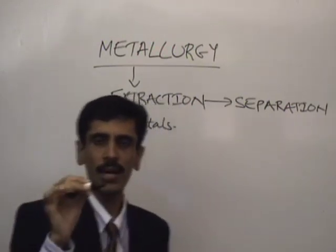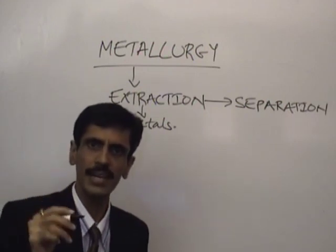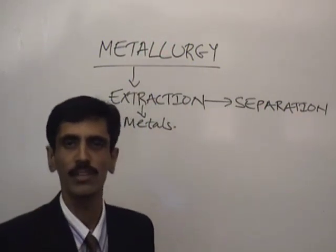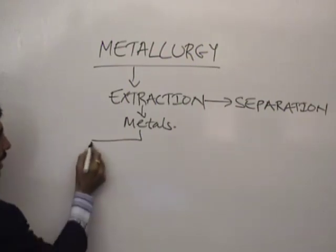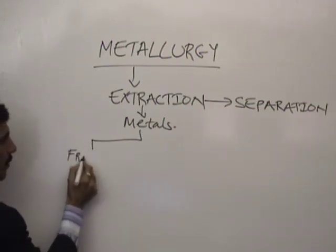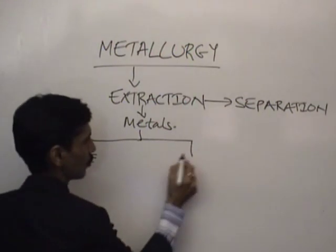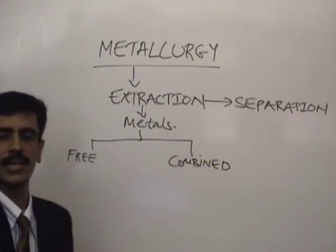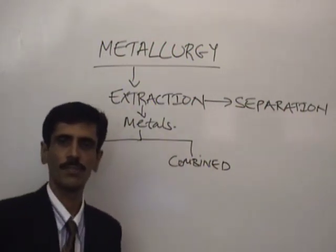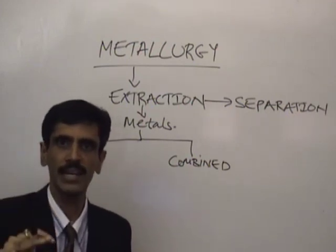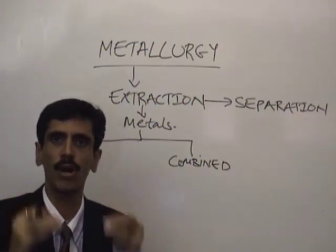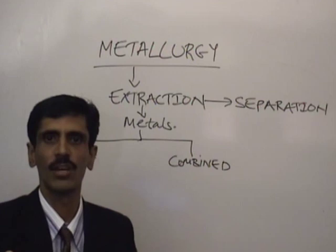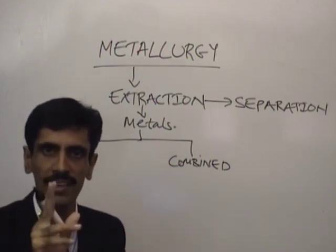When we talk about metals, the starting material we are going to consider is that metals are present in two possible states. State number one, we call it the free state. Now the difference is, when I talk about free state, that means the metal is not forming a chemical bond with any other element. It can be physically associated with some other substances, but there is no chemical association — that is called a free state.